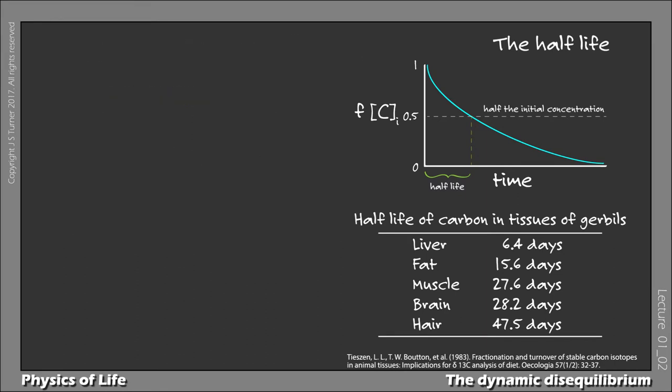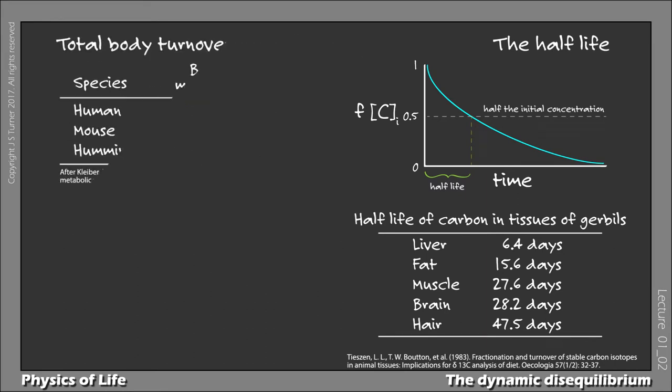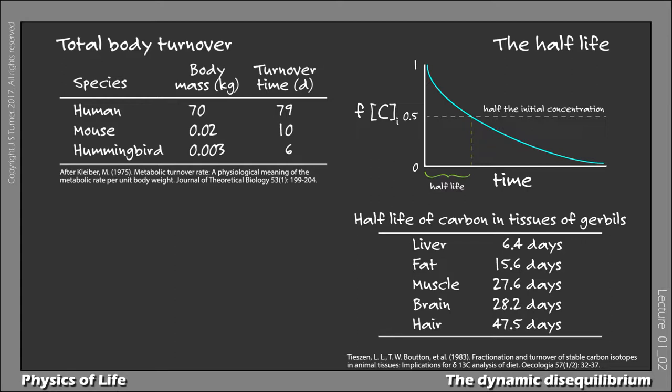This disequilibrium extends to the entire body. This means one could measure the total turnover time of the body mass, not just carbon. In humans, for example, the turnover time is about 79 days. In other words, the total mass of the body turns over nearly completely every 79 days.